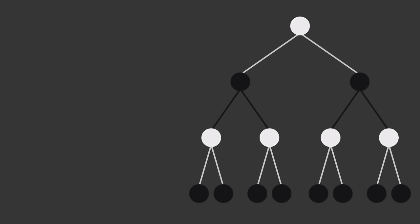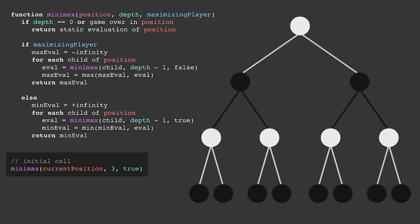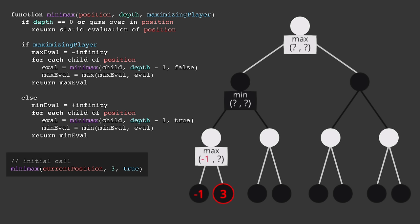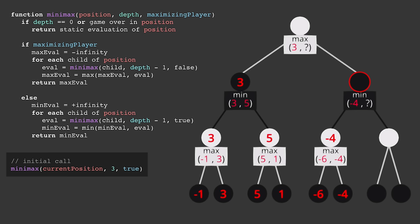Let's step through this example again, this time with the code in front of us. We'll need an initial call to the minimax algorithm to start things off. We're at the first position and we want to find the max of the two children, so we call minimax on the first child. It wants to find the min of its two children, so it calls minimax on its first child, which in turn wants to find the max of its two children. At this point, depth is equal to 0, so minimax returns the static evaluation of that position. This value gets passed up to the parent, which then calls minimax on its second child, receives the static evaluation from that, and returns the max between the two children. That value gets passed up to its parent, which now calls minimax on its second child, getting their static evaluations, and the max is passed up to the parent, which passes the min of its two children up to its parent. Hopefully it's quite clear how the algorithm uses recursion to search through the tree.